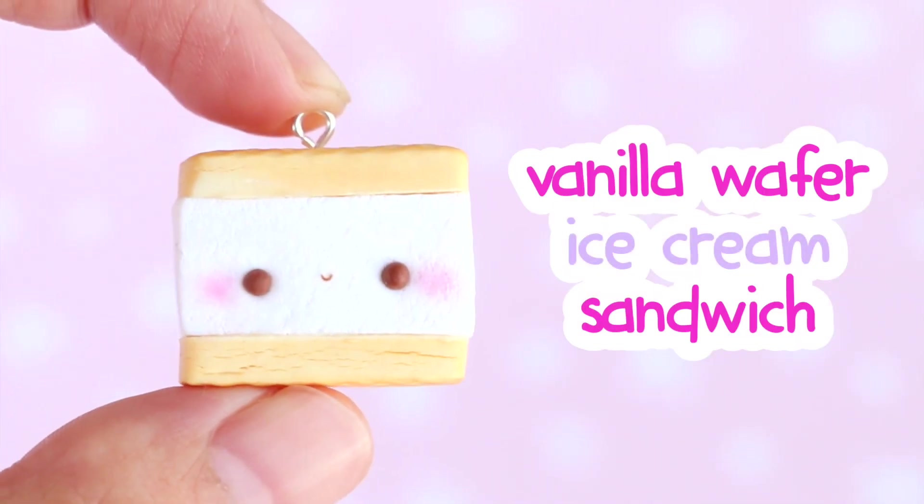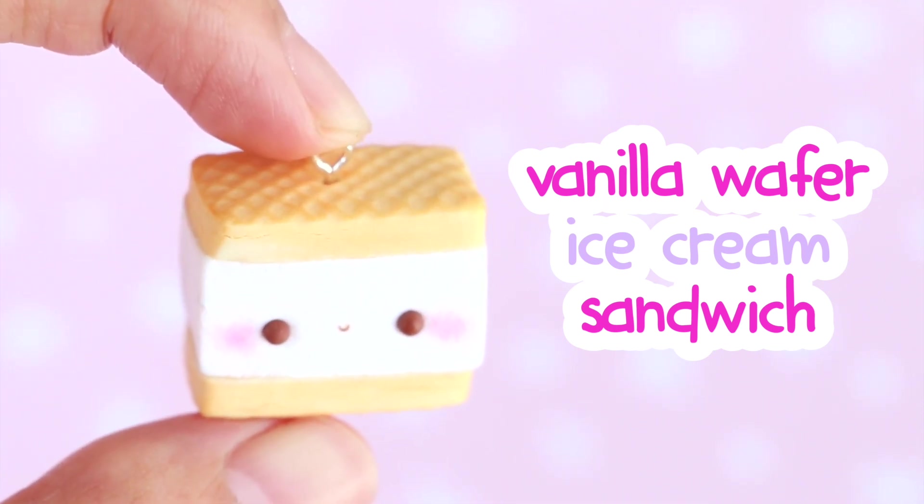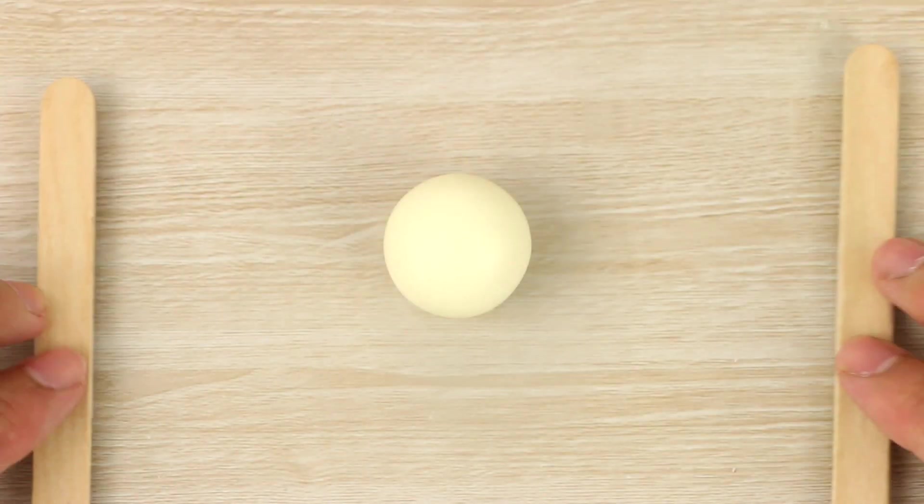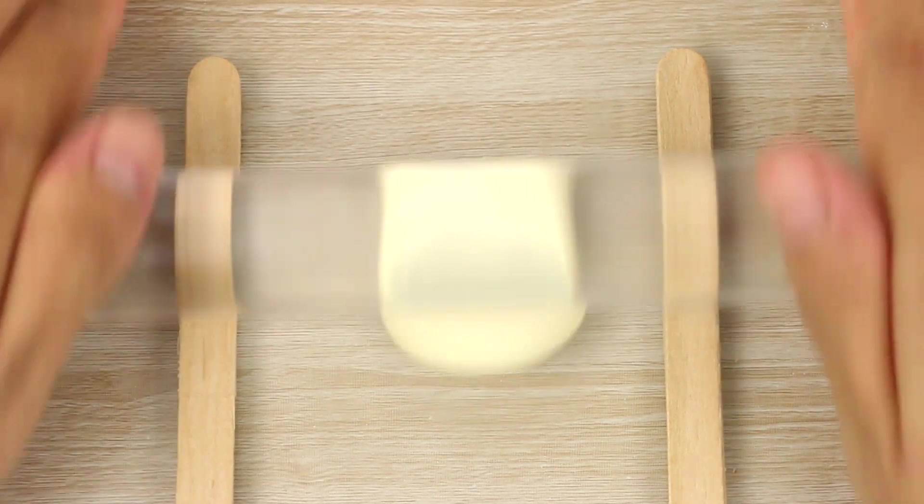So now I'm making a vanilla flavored one in between some vanilla wafers. And to make those, I've got a ball of some vanilla colored clay, and I'm rolling that flat between two stacks of two popsicle sticks.